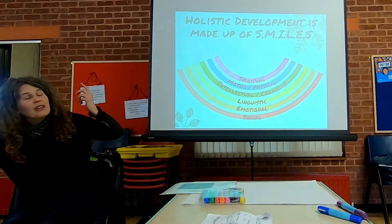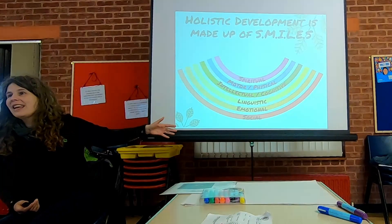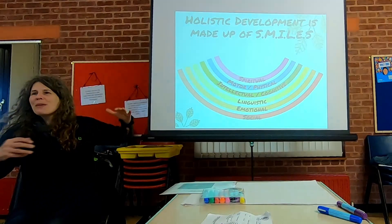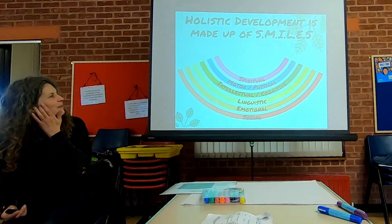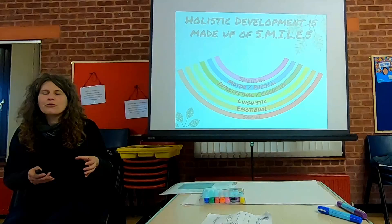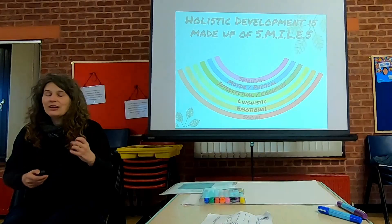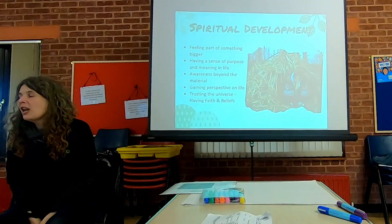We've got our acronym: holistic development is made up of SMILES — I've broken it into six different aspects of a person. I find the rainbow quite pleasing as a symbol for holistic development — it can smile and each stripe is part of a bigger whole. I'm going to run through each of these to give you context of what they mean, and then we'll do an exercise exploring how being in nature supports each of them.